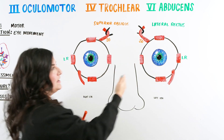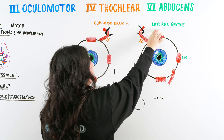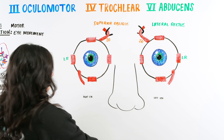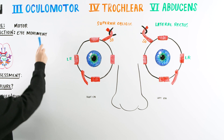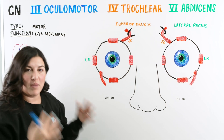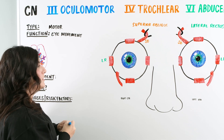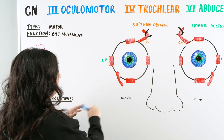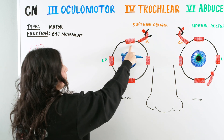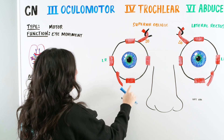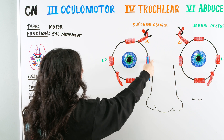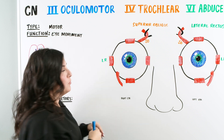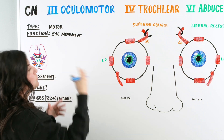Now you're going to notice that we've identified two muscles: abducens with the lateral rectus and trochlear with the superior oblique. But we have a bunch of other muscles we haven't talked about. That's because ocular motor is going to do the main portion of the movement and also a couple other things. The remaining muscles are our superior rectus, inferior rectus, medial rectus, and inferior oblique — and these four are what the ocular motor nerve is working with.